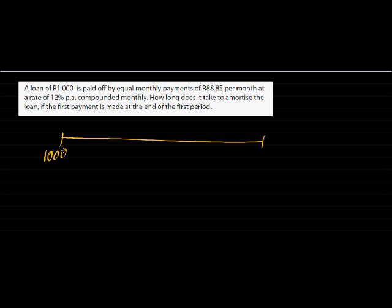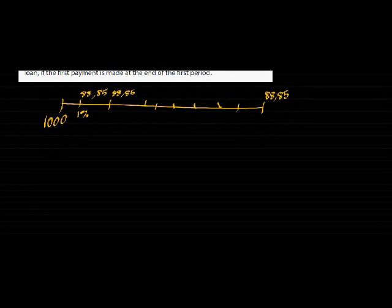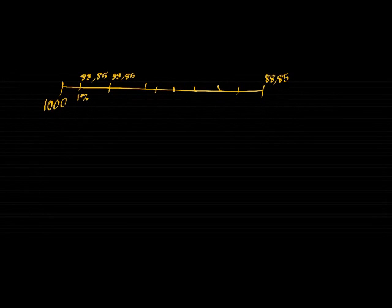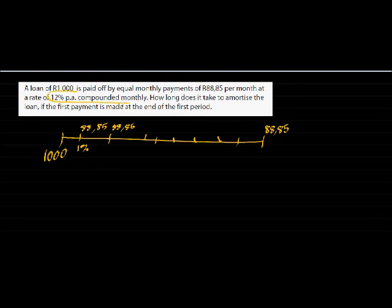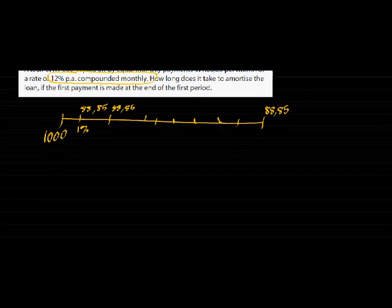So 1,000 Rand is a present value. And after one month, we start paying 88.85, every month, 88.85, all the way up till I make my last payment, 88.85. And all I know is that every time I'm getting 1% interest added, every time I pay, I get 1% interest added to what I still owe. Where did I get 1%? Well, 12% compounded monthly. And I'm rushing through this. I hope you're following me.